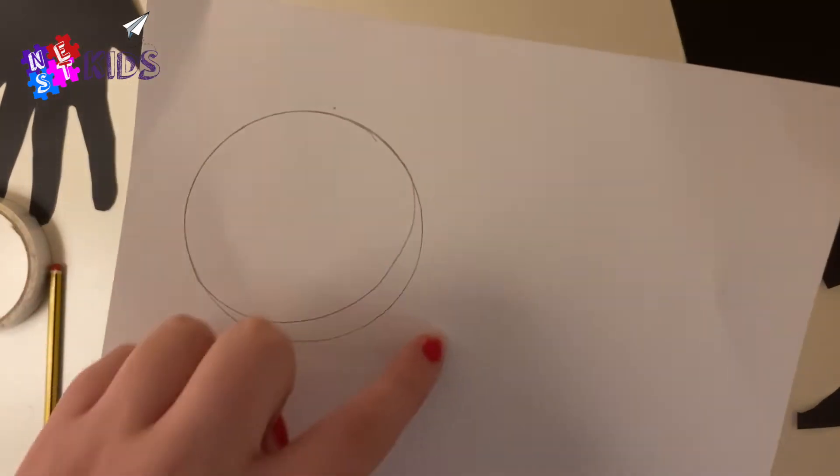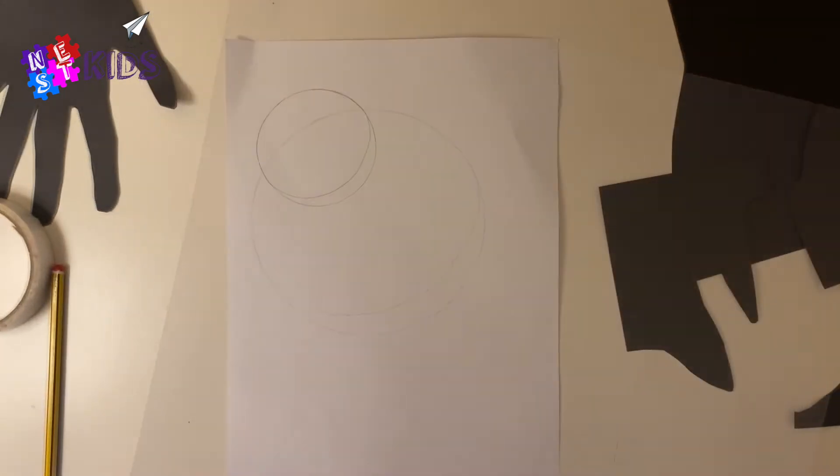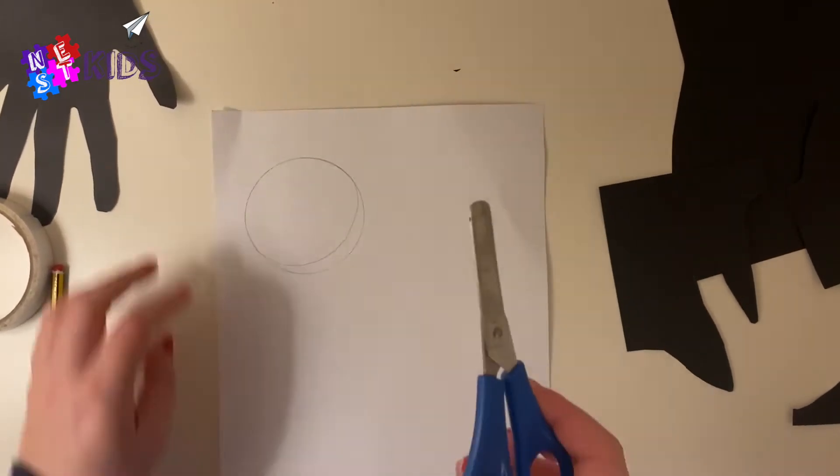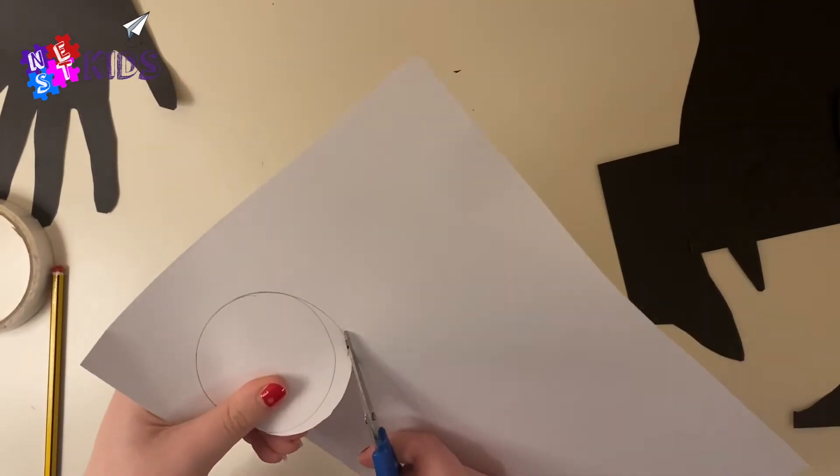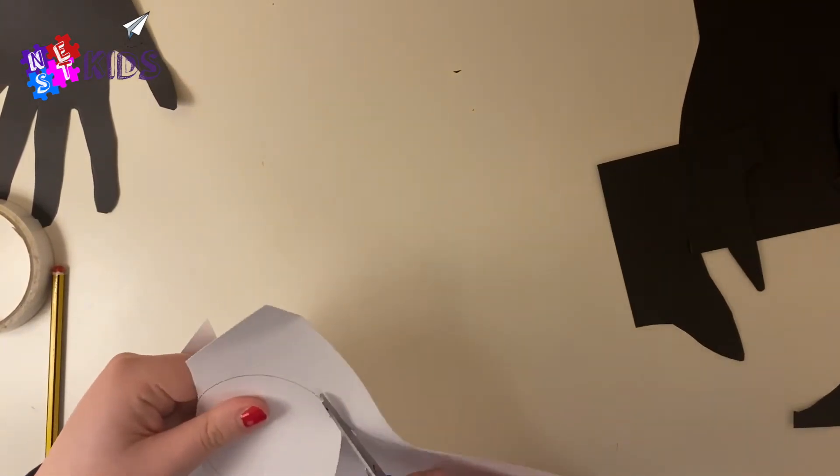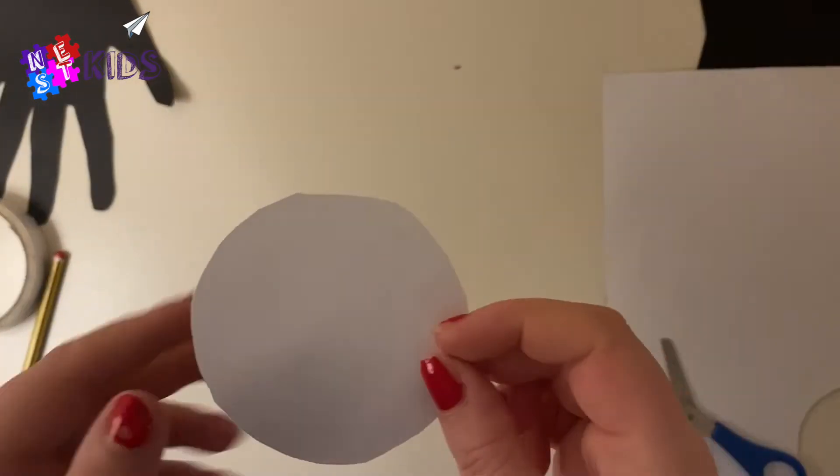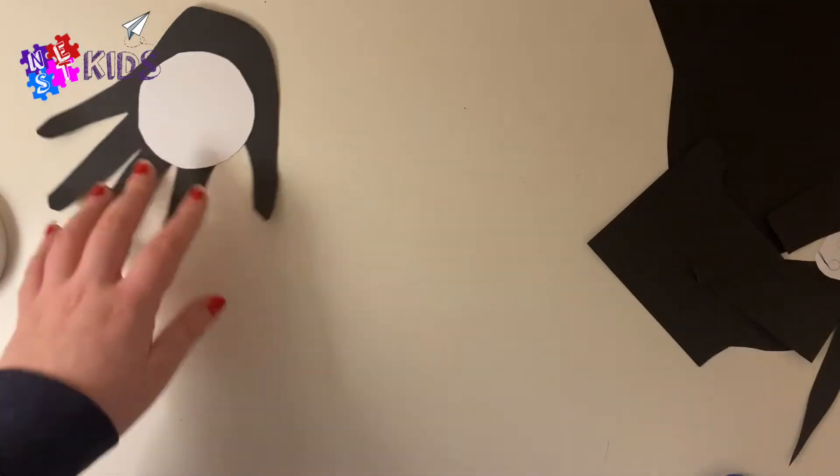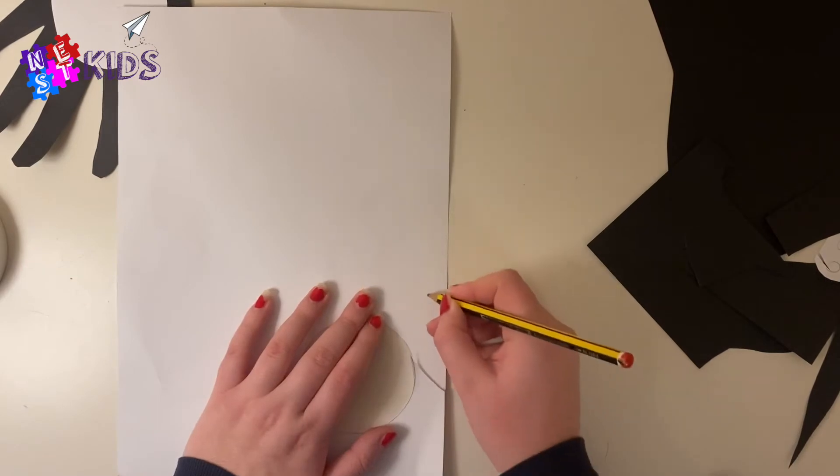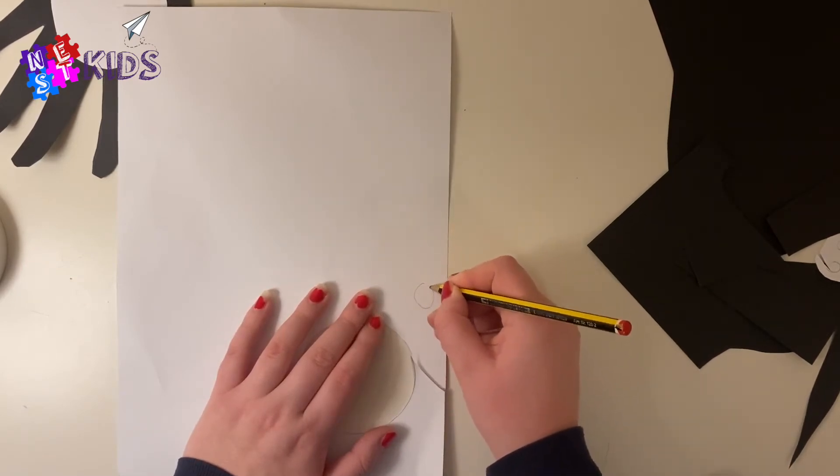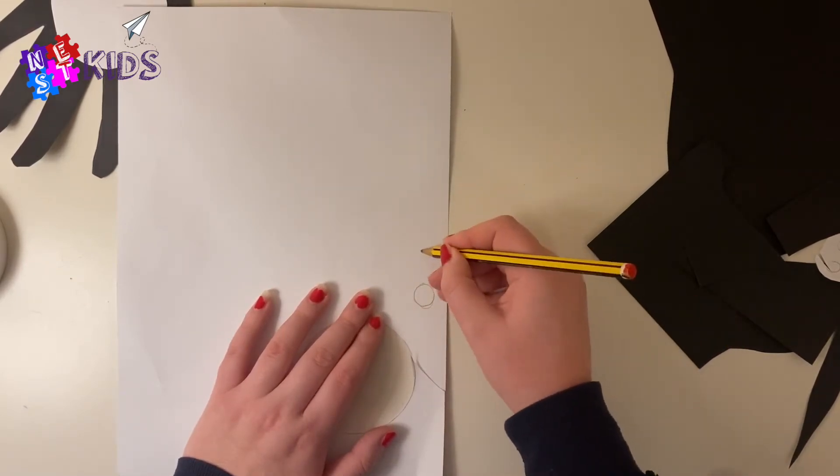Here we go, here's our circle. Again, be careful with the scissors. Now we're gonna cut the circle out, and this circle is going to be our penguin's tummy. We're gonna stick it on the black handprint that we cut out earlier. Stick it down like I have done there.